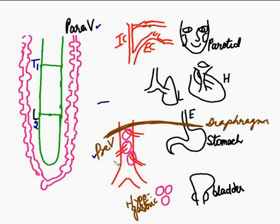In the pelvic area, the prevertebral ganglia are present as a separate set of ganglia known as the hypogastric ganglia. An important point to remember is that all structures which have a blood supply receive sympathetic innervation.